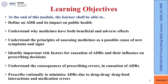At the end of this module, the learner shall be able to: define an adverse drug reaction and its impact on public health; understand why medicines have both beneficial and adverse effects; understand the principles of assessing medicines as a possible cause of new symptoms and signs; identify important risk factors for causation of ADRs and their influence on prescribing decisions; understand the consequences of prescribing errors in causation of ADRs; and prescribe rationally to minimize ADRs due to drug-drug or drug-food interactions and medication errors.